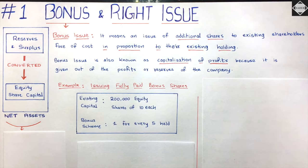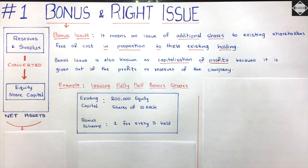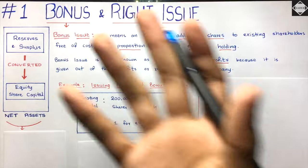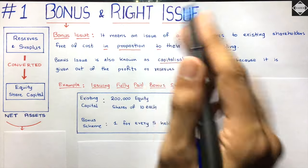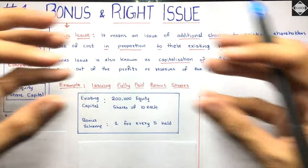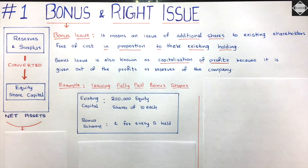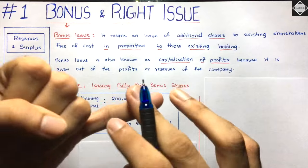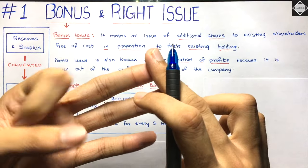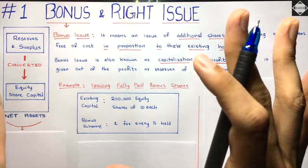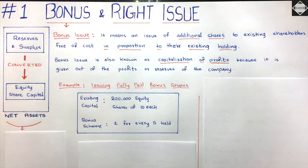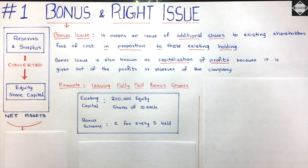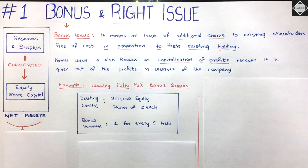Hi everyone, today in this video we're going to start this new chapter of accounting called bonus and right issue. There are two things involved in this chapter: bonus issue and right issue. We'll break this chapter into two parts - first understanding everything about bonus, and then moving on to right issue.